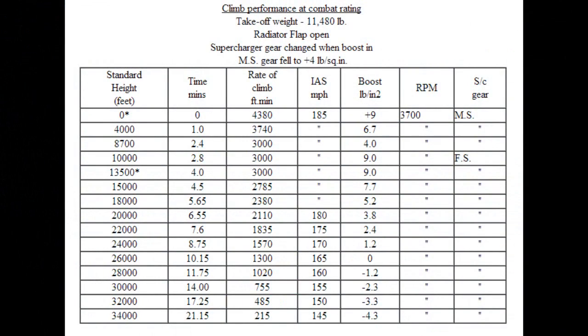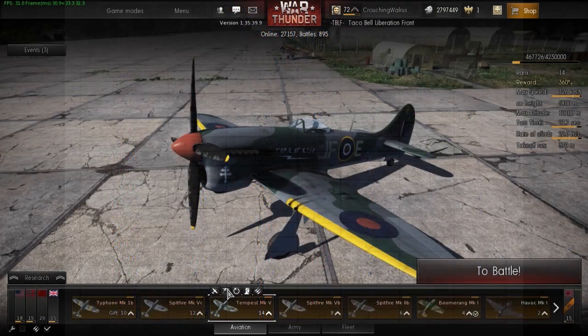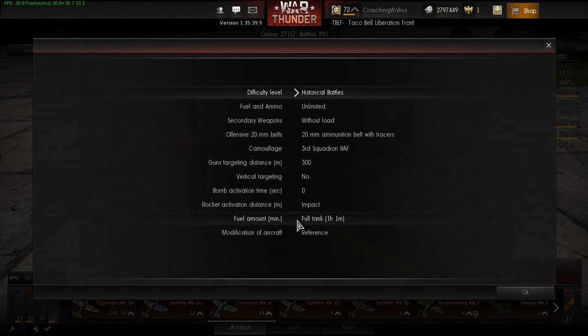On to the climb rate test. What you're seeing here is a chart depicting how long it took for the Tempest to get to certain altitudes under combat rating, which means the full power of the Tempest was being used, including war emergency power. I didn't mess around with any of the supercharger settings though, because I'm playing with mouse and keyboard and the instructor usually optimizes that for you.